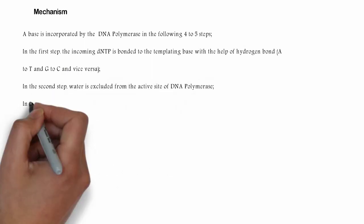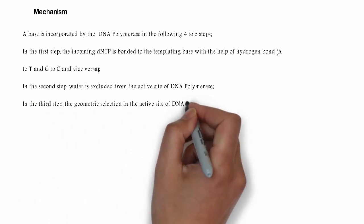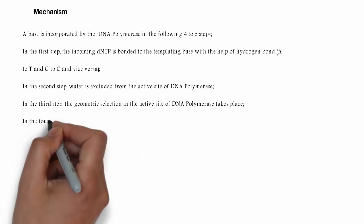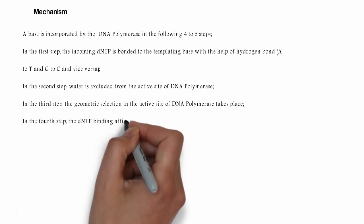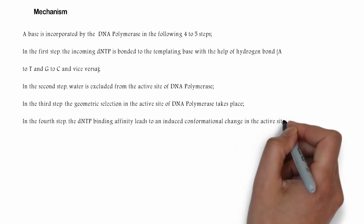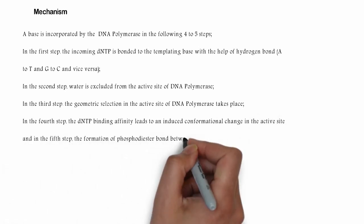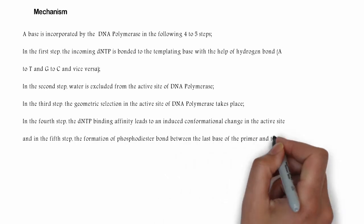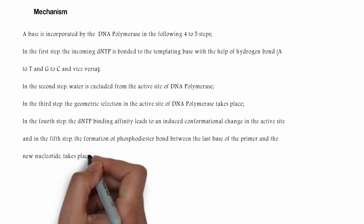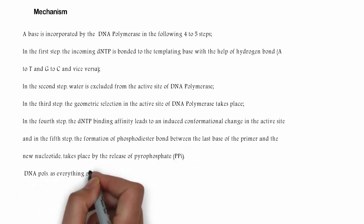In the second step, water is excluded from the active site of DNA polymerase. In the third step, the geometric selection in the active site of DNA polymerase takes place. In the fourth step, the dNTP binding affinity leads to an induced conformational change in the active site.